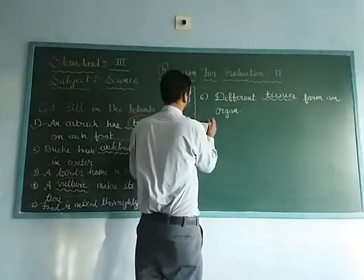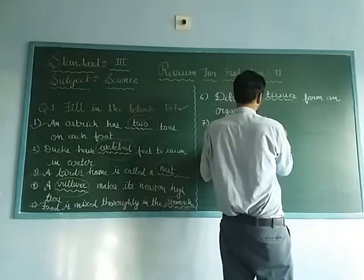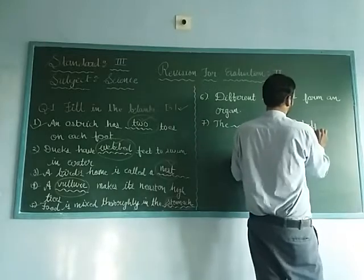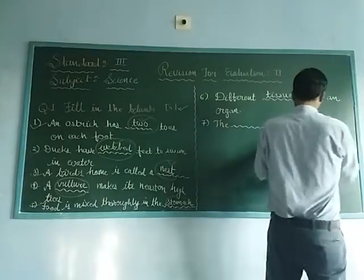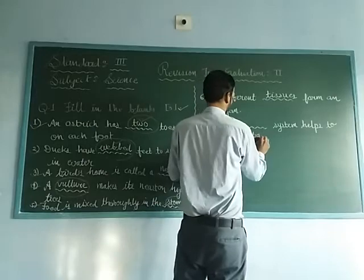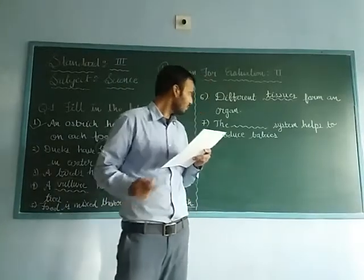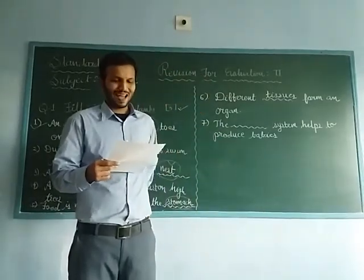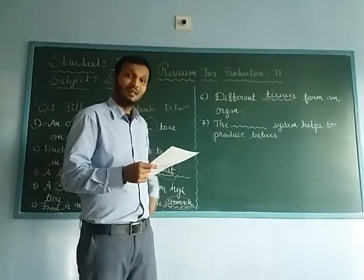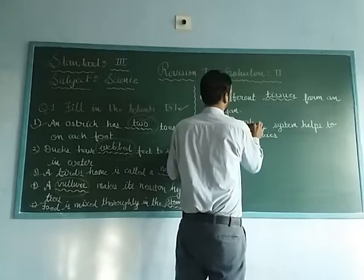Seventh number: the blank system helps to produce babies. There are two options: respiratory and reproductive. The answer is reproductive. The reproductive system helps to produce babies.